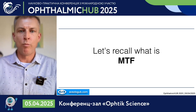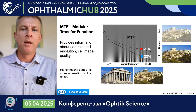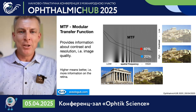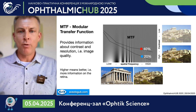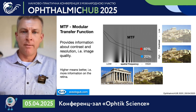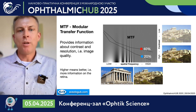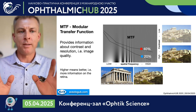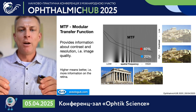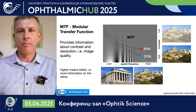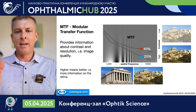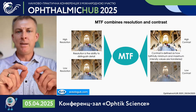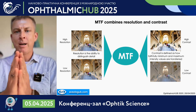MTF describes how optics transfer fine details and contrast. Large objects like chairs have low spatial frequency, while fine details like fabric texture have high spatial frequency. All these frequencies carry different contrast levels, and together they form the MTF graph. One lens might transmit 40% of visual information at a certain contrast and frequency level, while another transmits only 20%. Transmitting 100% of contrast across all frequencies is physically impossible — it's an optics limitation. MTF essentially merges resolution and contrast into one metric.